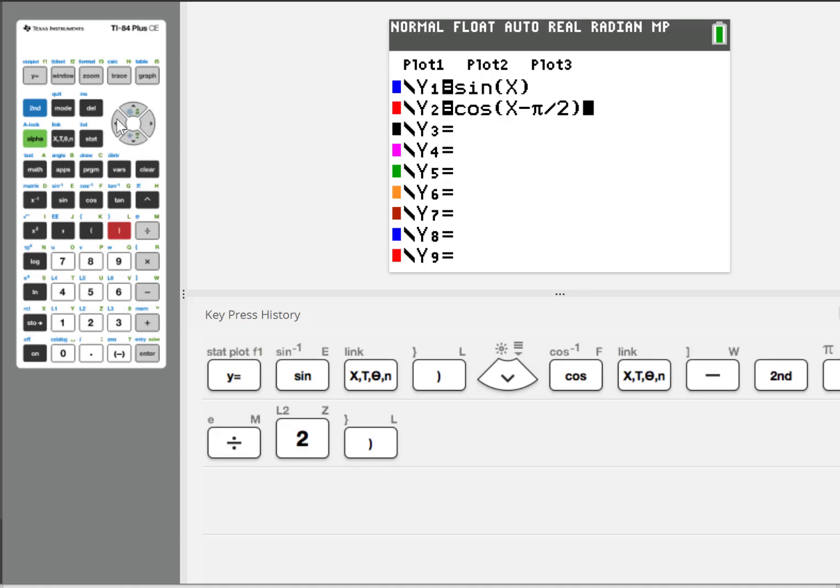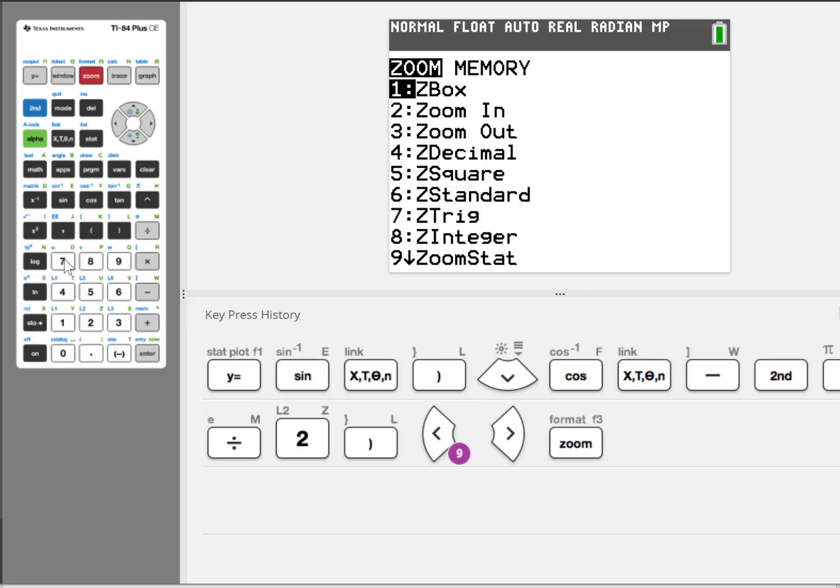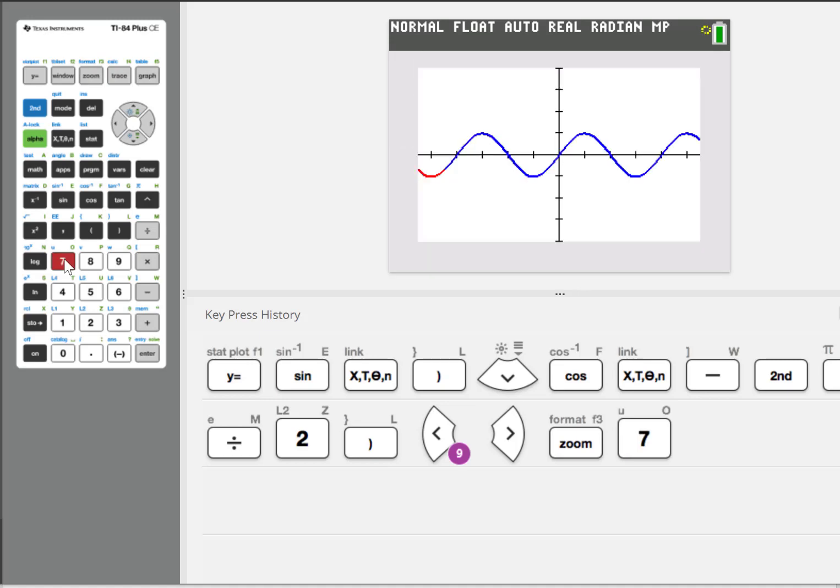If you have a black and white version, if you arrow over to that line on the end, you can hit enter a couple of times and change the thickness of one of the graphs. That might help you. But I don't need to do that. I have the blue and the red, so I'm going to hit zoom and then choice 7 for ztrig. It's just a nice trig viewing window. The x tick marks count by pi over 2 and the y tick marks count by 1. Let's click that and see what happens.